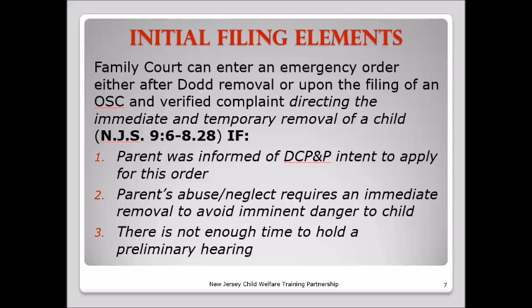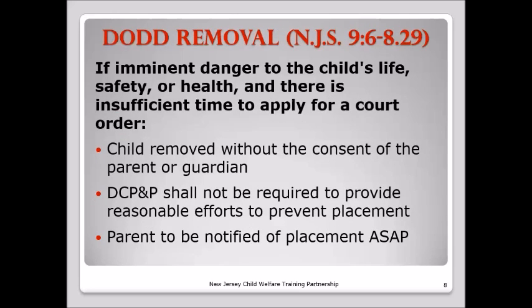The second element is that the parent's abuse or neglect requires the immediate removal to avoid imminent danger to the child. The judge has to be convinced that the removal has to happen now, because there is imminent danger that's going to happen right away to the child unless there's some kind of intervention. And the last element for the initial filing is there's not enough time to hold the hearing. A Dodd removal can happen if there's imminent danger to the child's life, safety, or health, and there is insufficient time to apply for a court order.